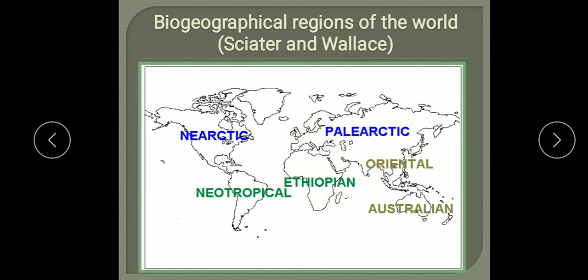Due to geographical changes and the movement of the earth's crust, the huge landmass broke off and its parts drifted apart and moved away from one another. Because of variable climatic conditions on these separated landmasses, plants and animals adapted themselves accordingly. We will now see which continents are included in these biogeographical regions.